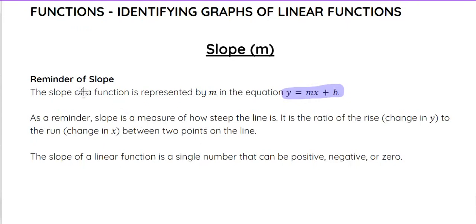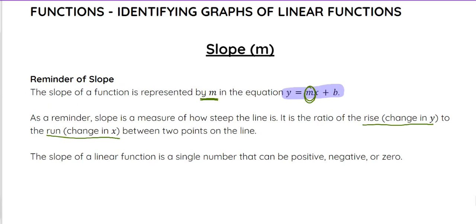The slope of a function is represented by m in the equation y equals mx plus b. Slope is a measure of how steep the line is — it is a ratio of the rise to the run between two points on the line. The slope of a linear function is going to be a single number that can be positive, negative, or zero for any linear function.